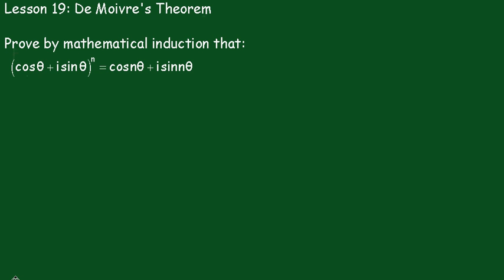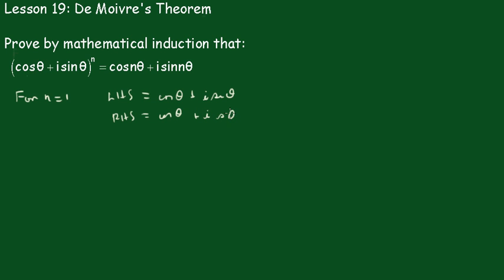Assuming you've done some mathematical induction: first of all, we'll show it's true for n equals 1. For n equals 1, the left hand side equals cos θ + i sin θ, and the right hand side is also equal to cos θ + i sin θ on substituting n equals 1. Therefore, the left hand side equals the right hand side — we'll call this (★) — and so this is true for n equals 1.